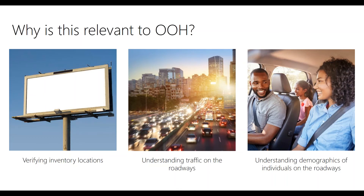So why is this relevant to out-of-home? We use a lot of this today, but also going forward there are a lot of components that fit into how we're building the new system. We're going to use GIS to verify inventory locations with latitudes and longitudes and make sure things are where we think they are. But it also helps us understand traffic on the roadways and creates a network of roadway information across the U.S. Additionally, and this is where this presentation is going, we need it to understand demographics of the individuals on the roadways themselves — who are these people, what are they like, what do they like, what do they buy. So Monica is going to talk about that now.